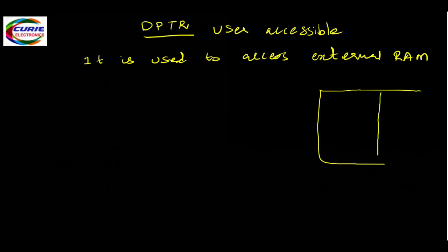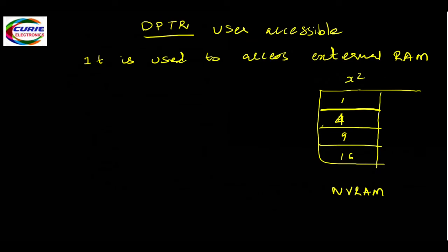The data pointer is used to access external RAM. Sometimes we will have a table of data values stored in external memory — for example, a table of squares of numbers: 1, 4, 9, 16, and so on. These values will be stored in NVRAM (non-volatile RAM), so they are retained even when power is off. When the CPU needs to access this external data, it fetches the address from the data pointer. The 8051 supports 64 kilobytes of external RAM.